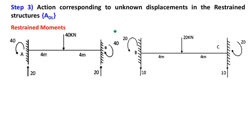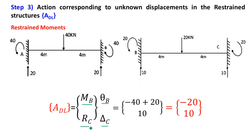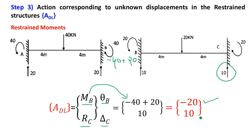Now we compile the ADL matrix. The first element is moment at B: in span AB it is −40 and in span BC it is +20, so total moment at B = −40 + 20 = −20. The second element is reaction at C = +10 kN upward. Therefore ADL = [−20, +10].